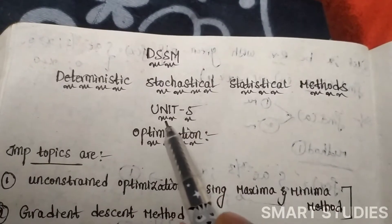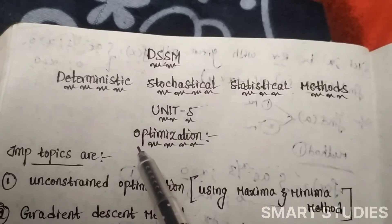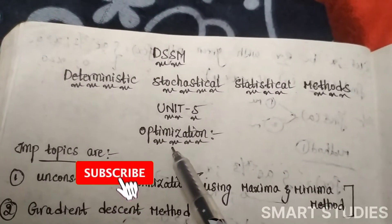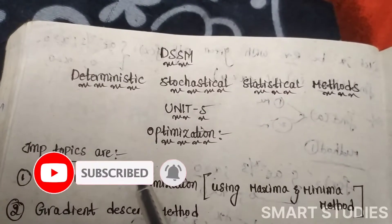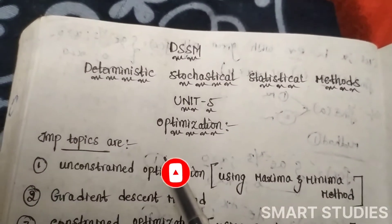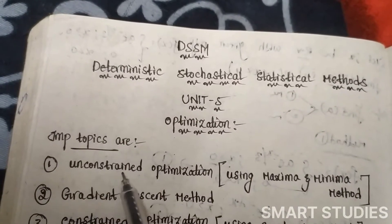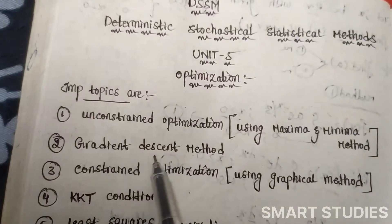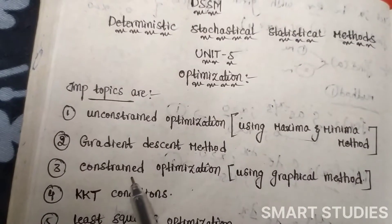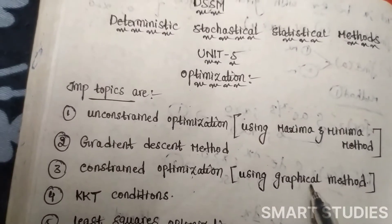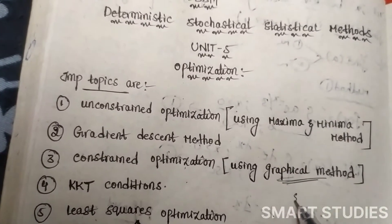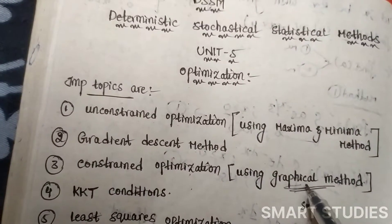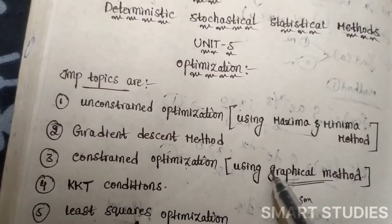Hello guys, welcome to my YouTube channel. In this video we will discuss Unit 5 of the DSSM subject, that is Optimization. In optimization we will discuss the important topics from the examination point of view. The first one is unconstrained optimization, which uses the maxima-minima method. The second one is gradient descent method, and the third one is constrained optimization, which uses the graphical method or simplex method.